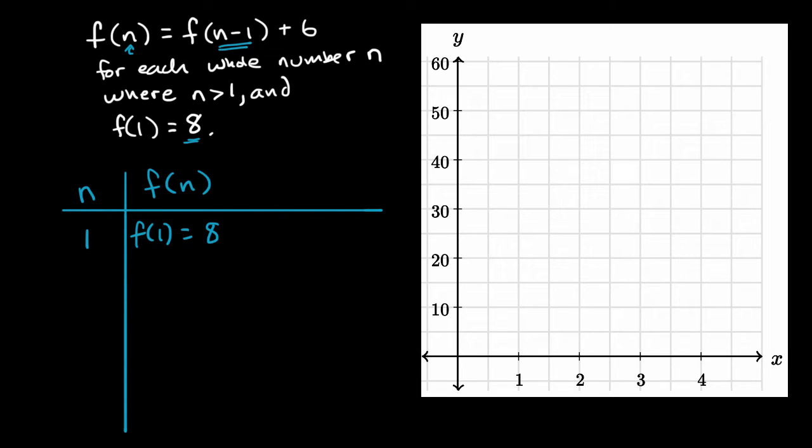Now let's go to when n equals two. Well, f of two is equal to f of two minus one. So it's equal to f of one plus six. Well, we know that f of one, we just figured it out, is eight. So it's equal to eight plus six, which is equal to 14.